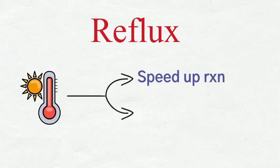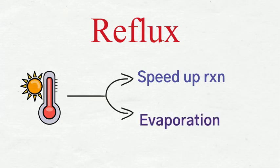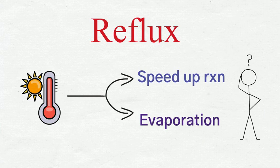We know that chemical reactions are faster at higher temperatures, so we can heat a reaction to help speed it up. But molecules evaporate at temperatures above their boiling points. So then, how can we speed up a reaction without losing anything from the reaction mixture?